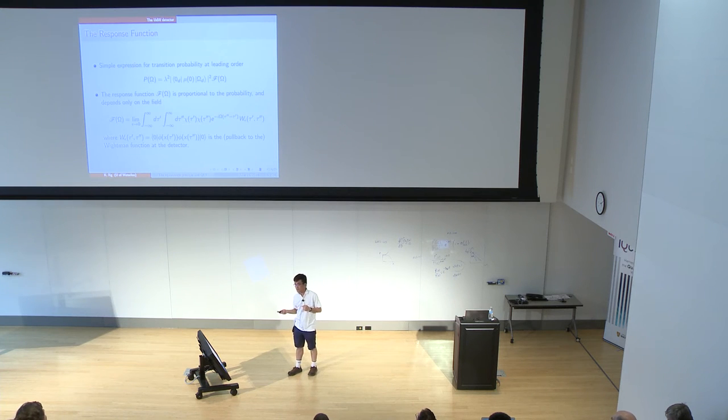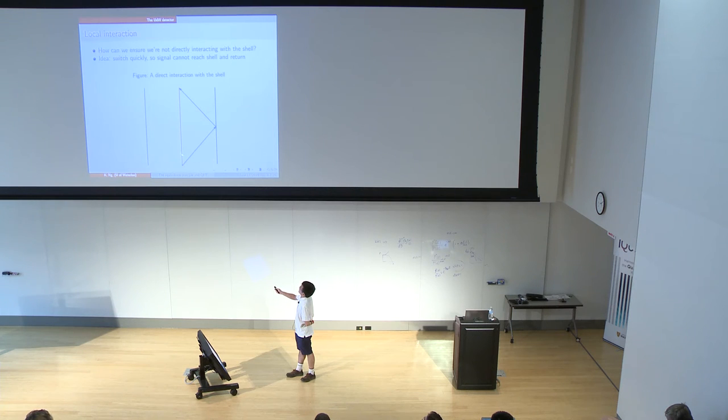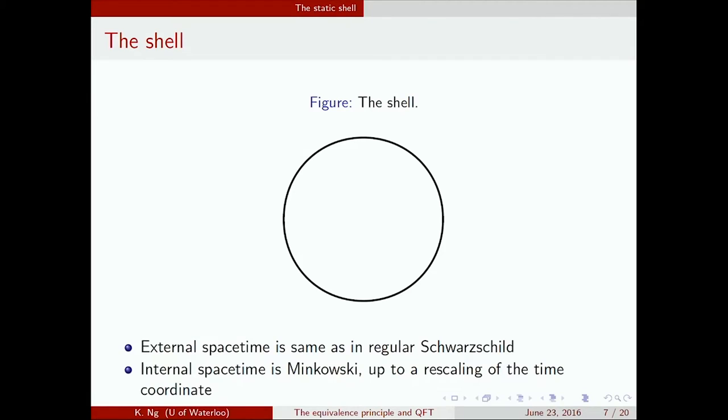Now I keep insisting that I want this interaction to be local—I want to interact only with the local vacuum. The idea here is to switch this detector quickly. What we don't want is for something like this to happen: we switch the detector on, and then we have some signal that reaches the shell and then goes back to the detector. We don't want that. So we want to switch faster than this can happen.